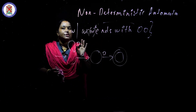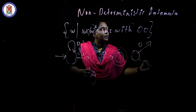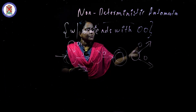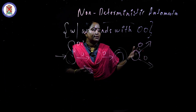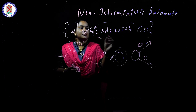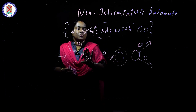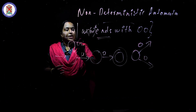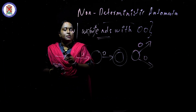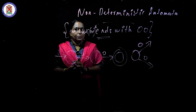Also, every state can have two transitions for the same symbol. For example, a machine can have zero going here and zero also going here - the same symbol used for two transitions is accepted in non-deterministic automata. For W element of (0+1)* ending with zero zero, this is the NFA, and you can also draw it with self-loops - both are correct because we only care about the accepting condition.